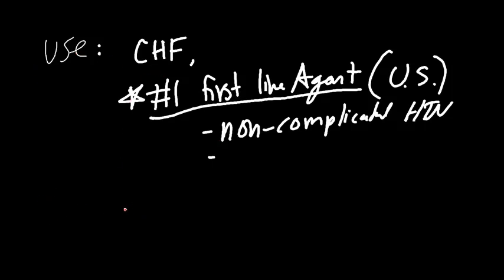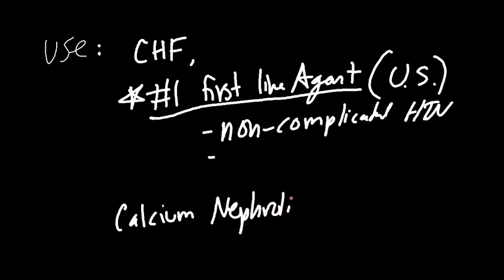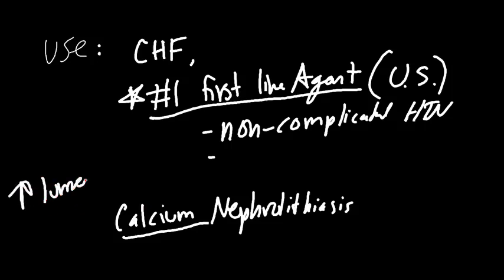Thiazide diuretics are also used for calcium nephrolithiasis — kidney stones made of calcium — which form due to high calcium levels in the lumen. By giving a thiazide diuretic, you decrease luminal calcium (since you're increasing calcium reabsorption), which decreases the chances of forming a calcium kidney stone.